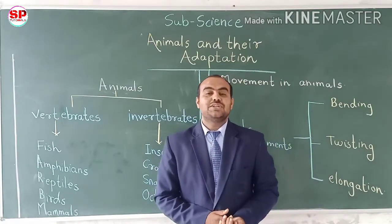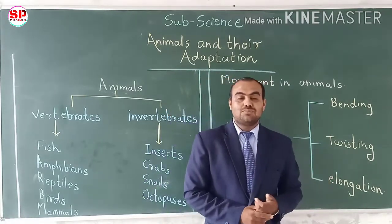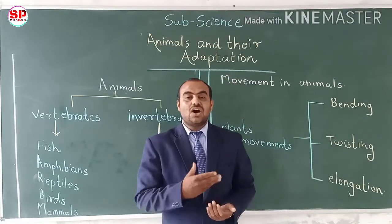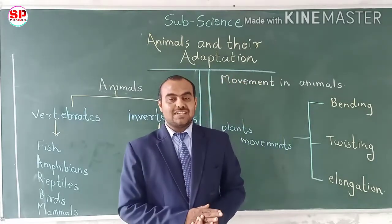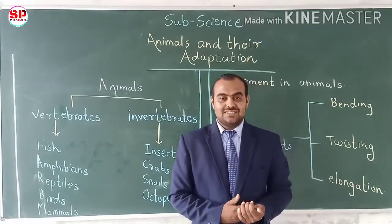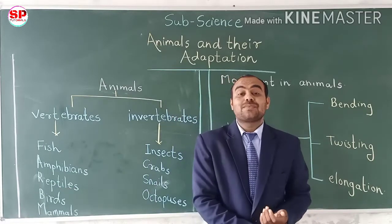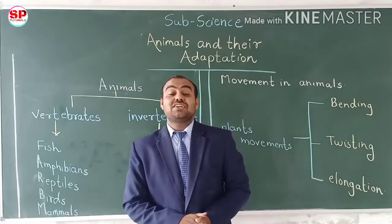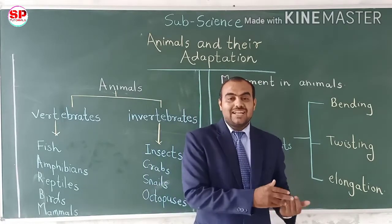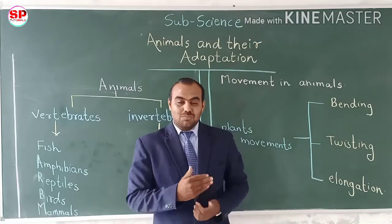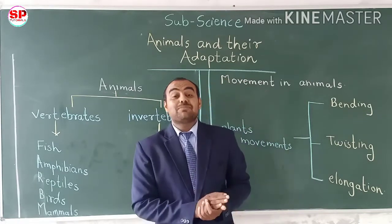We already know that animals and plants are both living things found all over the earth. Some animals are changing some of their characteristics — they are developing special features for a specific region. We have also discussed adaptations in animals in previous standards. Now we are going to discuss more details in this video. There are two types of animals.